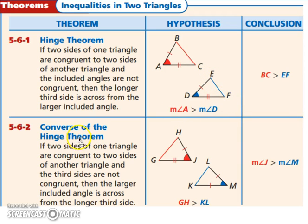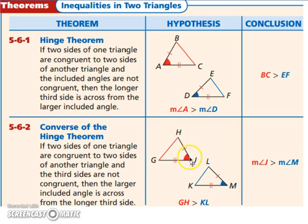The converse of the hinge theorem is just that theorem backwards. So if GH is larger, then angle J is going to be the larger angle.